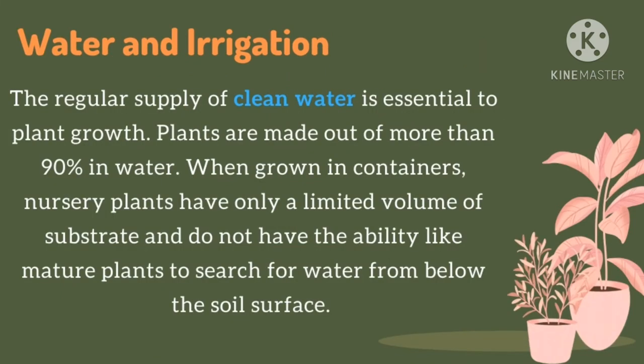First is water and irrigation. Clean and sufficient water supply is vital among plants. In fact, they are made out of 90% water. If plants are grown in containers, it needs more attention and care, especially in watering. This is because containers limit the water availability compared to plants directly planted in the soil, where water is present underneath. Grown roots that span over time have a better chance of getting the water necessary for growing plants.